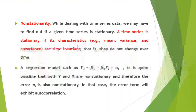While dealing with time series data, we usually confront the phenomena of non-stationarity. Therefore, we may have to find out if a given time series is stationary or not. In a time series regression model such as Yt = β1 + β2·Xt + ut, it is quite possible that both Y and X are non-stationary and therefore the error term ut is also non-stationary. In that case, the error term will exhibit autocorrelation. Therefore, non-stationarity of the data becomes another reason for the problem of autocorrelation.